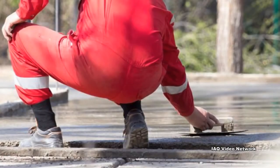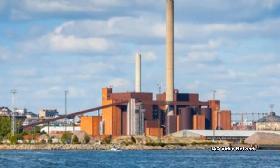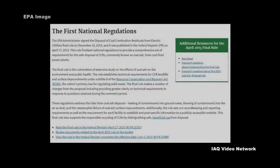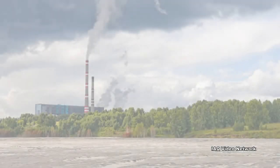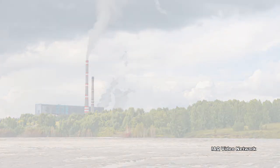Coal ash can be recycled into products like concrete or wallboard, but much of it is disposed of in surface impoundments or in landfills. Some power plants may discharge it into a nearby waterway under the plant's water discharge permit. In 2015, the Disposal of Coal Combustion Residuals from Electric Utilities Final Rule was published in the Federal Register. It delivers national regulations to provide a comprehensive set of requirements for the safe disposal of coal combustion residuals from coal-fired power plants.